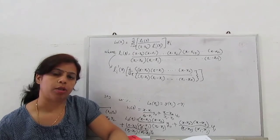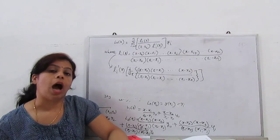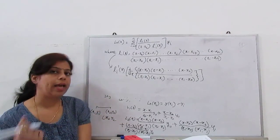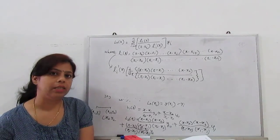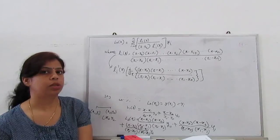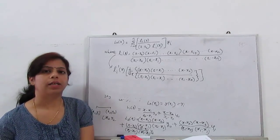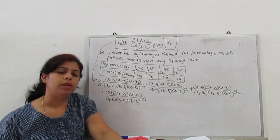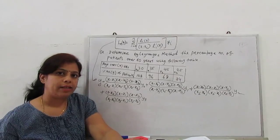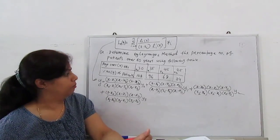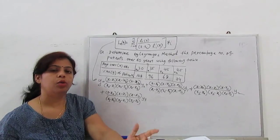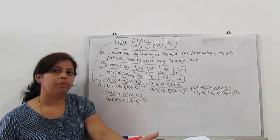This is the general Lagrangian interpolation formula. Let's see how it works with an example to easily understand how we use this formula.